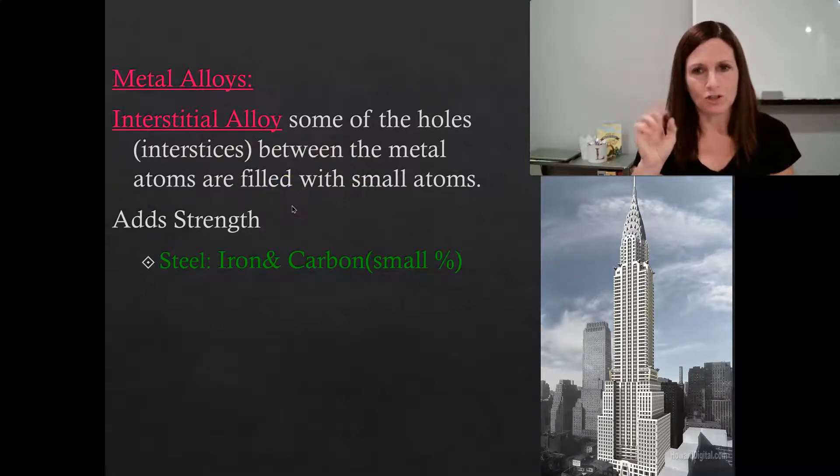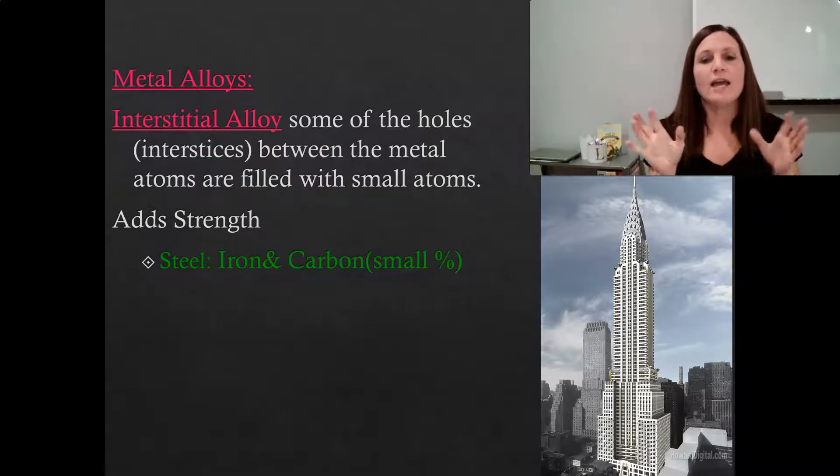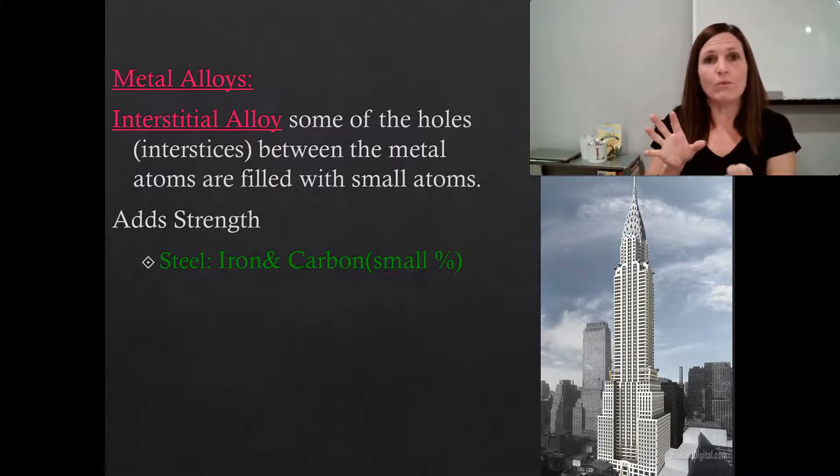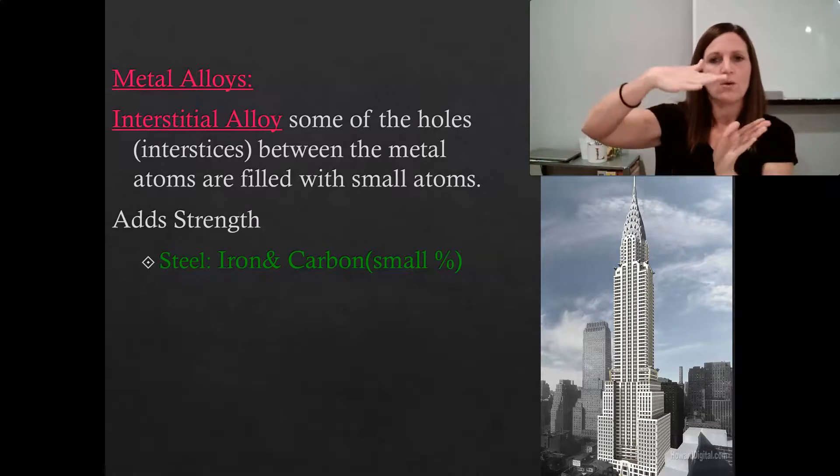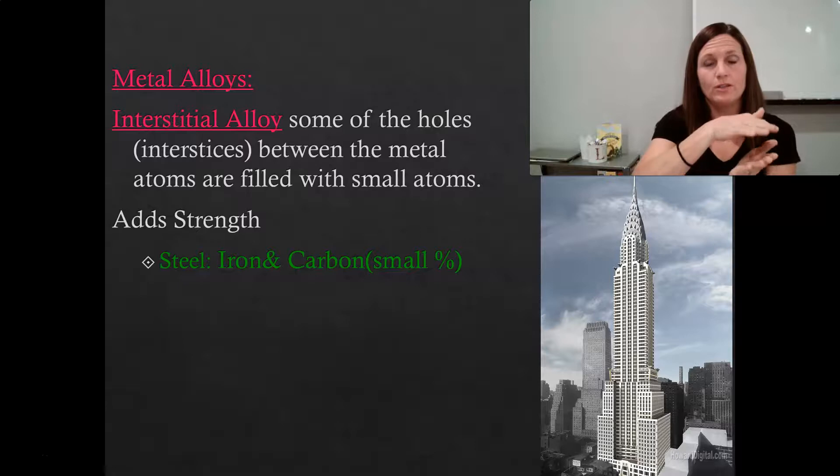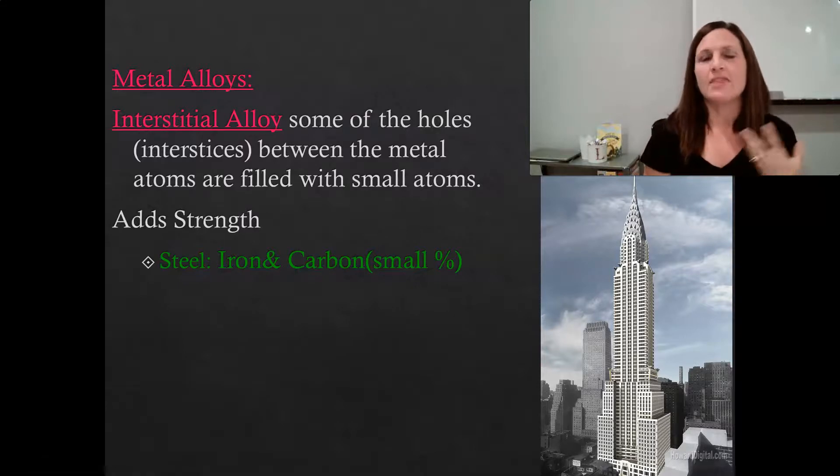Before we look at the picture of what this looks like in terms of the metal, I want you to picture if you have a car or a boat or an RV and you don't want it to roll. So of course you pull the parking brake, but then to add even more stability, you put those wood blocks under the tires in order to hold the car still. That is the effect that adding these small atoms to the interstices has on the metal.